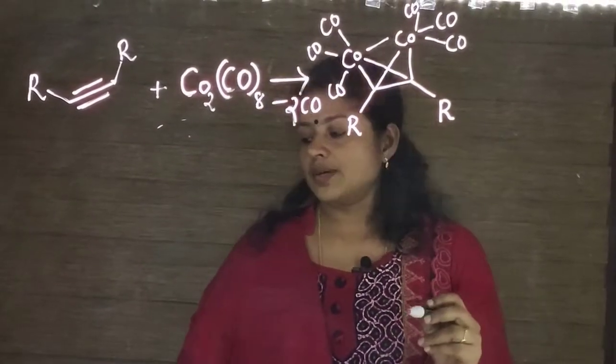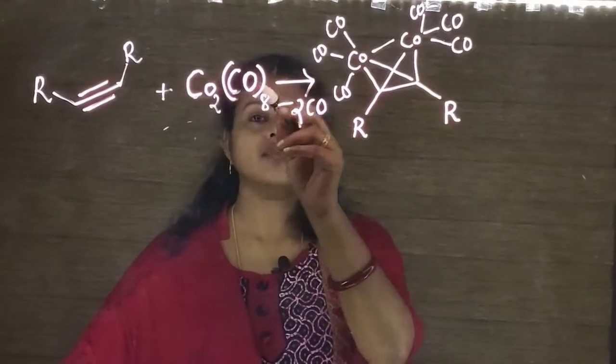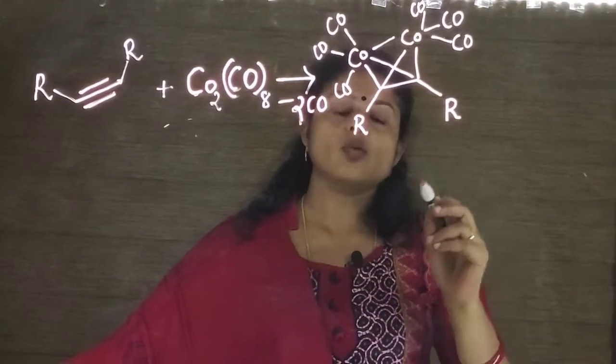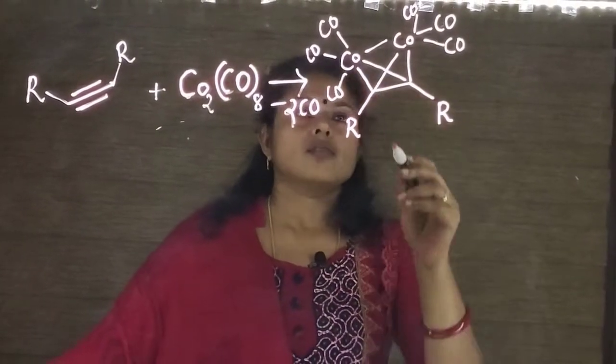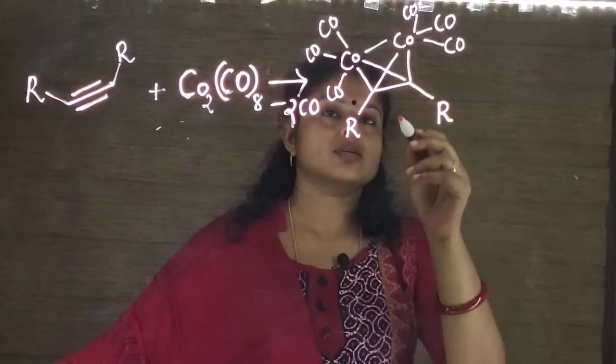So this is the first step. In this first step, the cyclization of alkyne with the cobalt hexacarbonyl forms this second product.